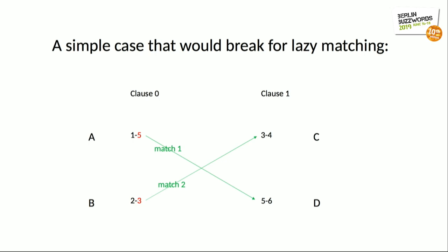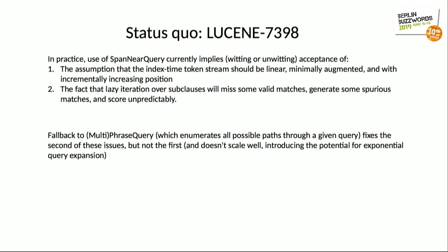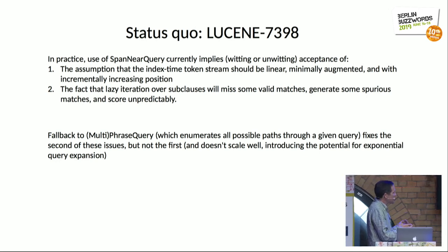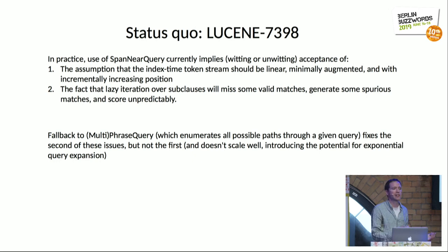This is also an example where decreasing end position can cause matches not to be found. Match one would not be found until advancing to position D in clause two, and then you have to be able to backtrack to position C when your end position decreases. As a replacement for span near query, the current implementation of the interval source API has similar properties to multi-phrase query, which falls back on enumerating all possible paths through a given query. That works in some ways, but it also introduces the potential for exponential query expansion, which is problematic particularly if you're interested in heavily leveraging synonyms at index time.